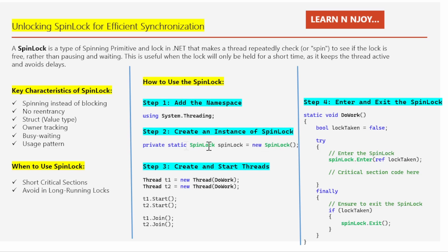Marking the instance as static means it will be shared across all threads in the program. This spin lock is used to control access to a critical section, ensuring that only one thread at a time can access it.